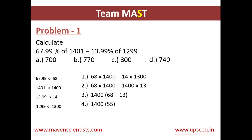So we get 1400 × 55. Now we need to remember that 67.99 and 13.99 were percentages, so we need to divide this figure by 100. We get 1400 × 55 ÷ 100, which gives us 14 × 55.